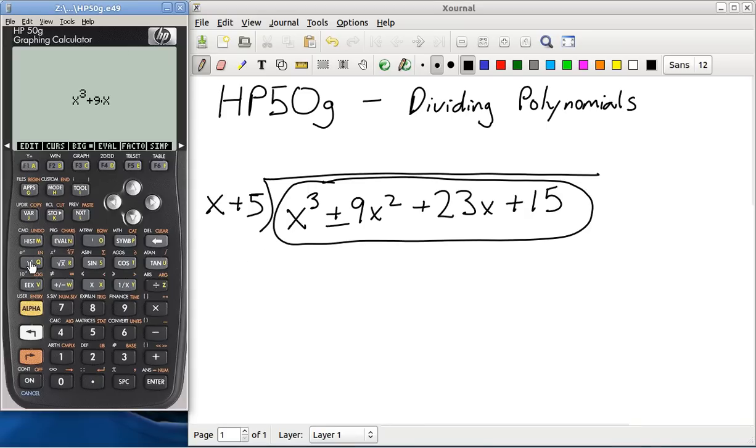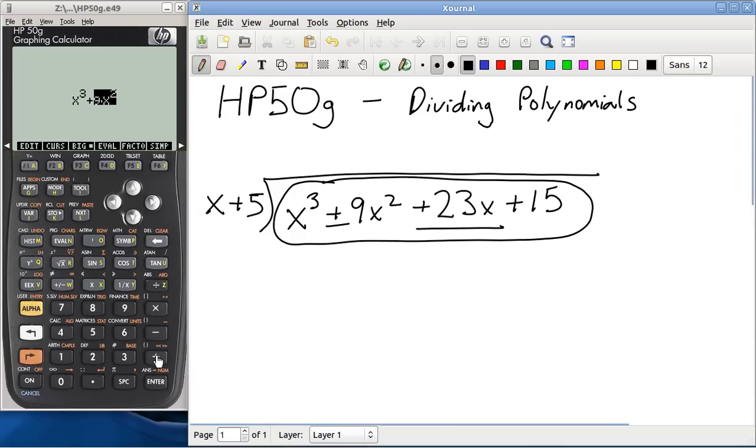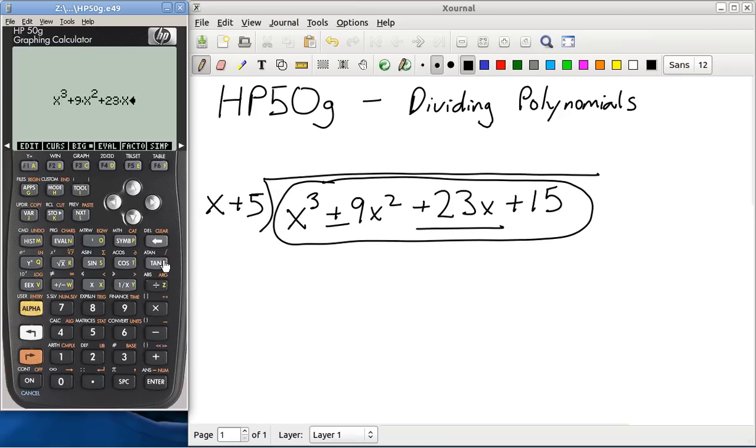9, x. Remember the yx squared, or the yx key. Squared. Then you highlight this term. And then we're going to put in plus 23x. Plus 2, 3, x. And the next part is plus 15, plus 15.